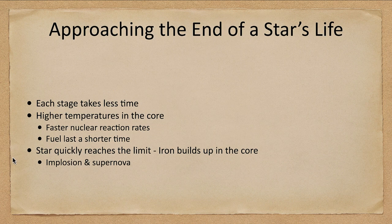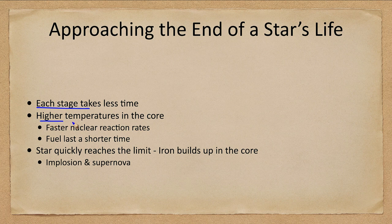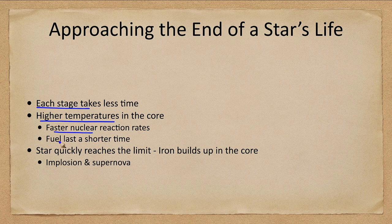What happens as we get to the end of the life of a star? Well we find that each stage takes less and less time. We get higher and higher temperatures in the core. So that means the nuclear reaction rates are going faster and the fuel lasts a much shorter time.